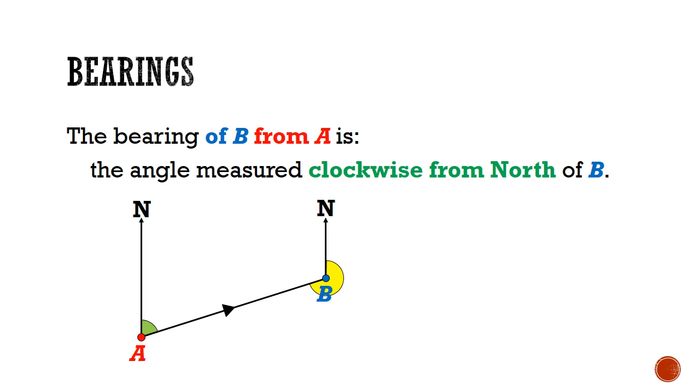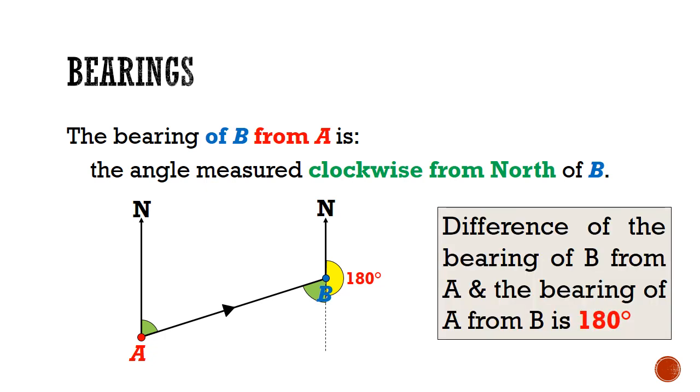I'd like to point out an important relationship between the bearing of B from A and the bearing of A from B, shown here as the green and yellow angles. I can always take the bigger angle and divide it into 2 pieces. One part will be 180 degrees, while the smaller piece will be equal to the smaller angle. Hence, I can note that the difference of the values between the bearing of B from A and the bearing of A from B is always 180 degrees.